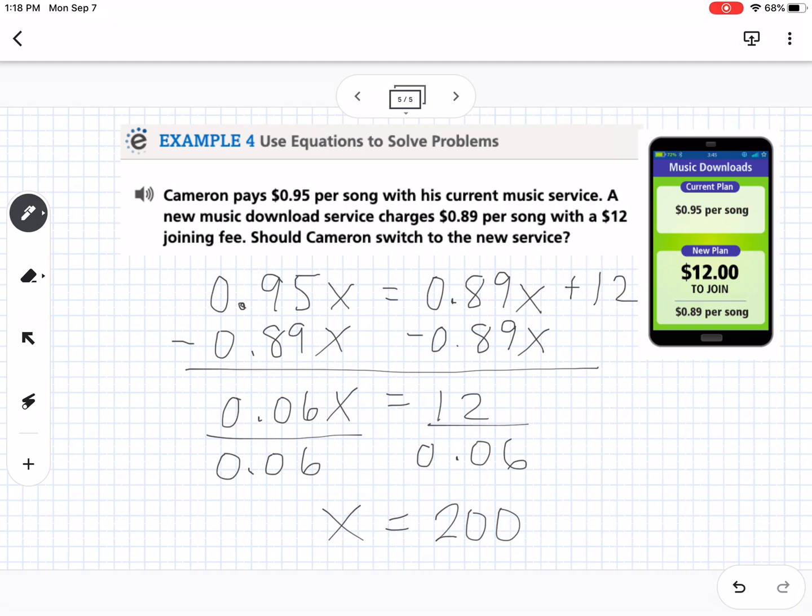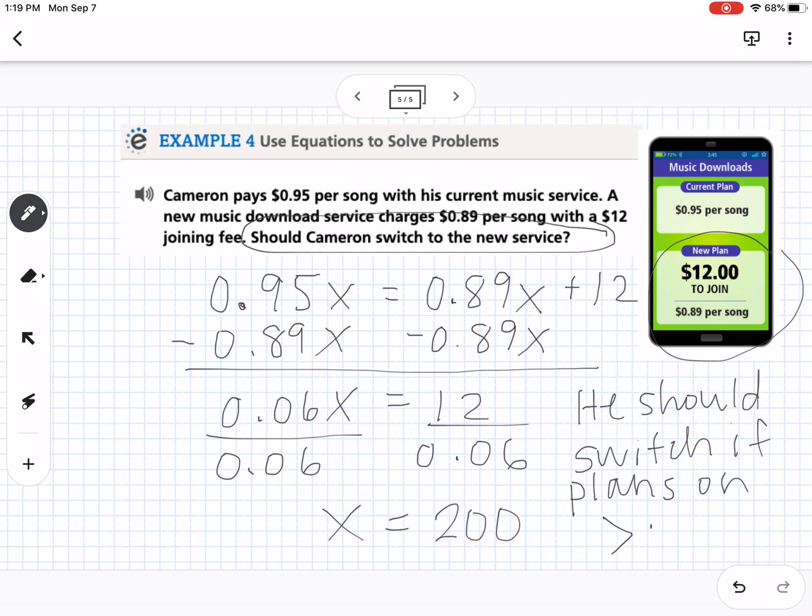So that means that if Cameron downloads 200 songs, the two accounts would cost him the same amount. So what we want to figure out is should Cameron switch to the new service. So if it's more than 200 songs, it means that the new plan is going to be cheaper. If it's less than 200 songs, the old plan is going to be cheaper. So we can say he should switch if he plans on downloading greater than 200 songs. So it depends on how many songs he needs for which plan is going to be better.